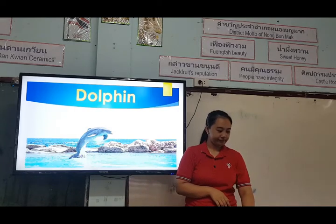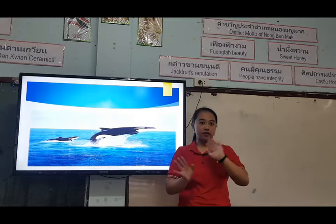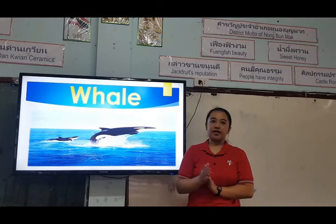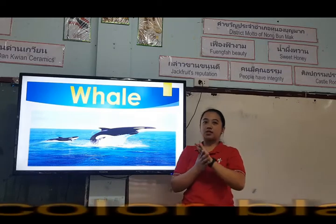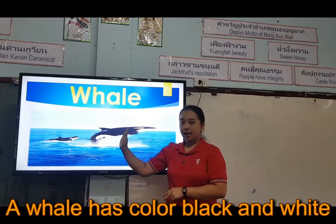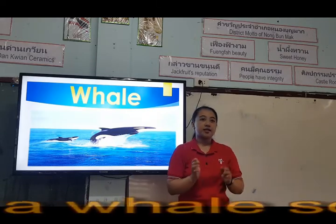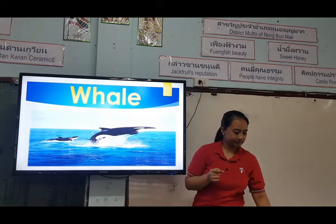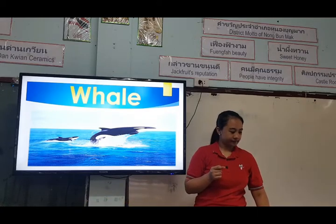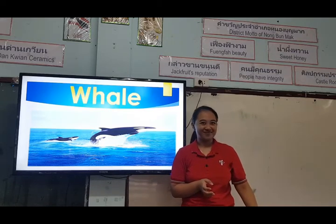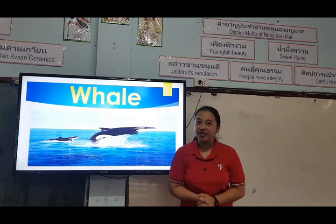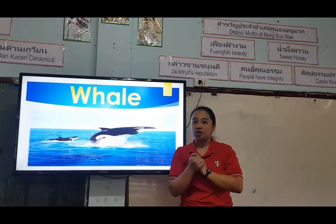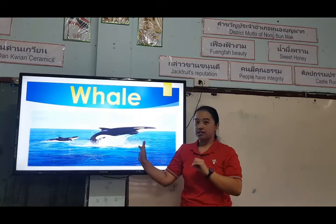Next, we have... This is not a dolphin. What do you think is this? It's a whale. A whale has two colors, like a cow — it has color black and color white. What does a whale sound like? Let's listen. That is what a whale sounds like. The first one I showed you was a dolphin; next is the whale.